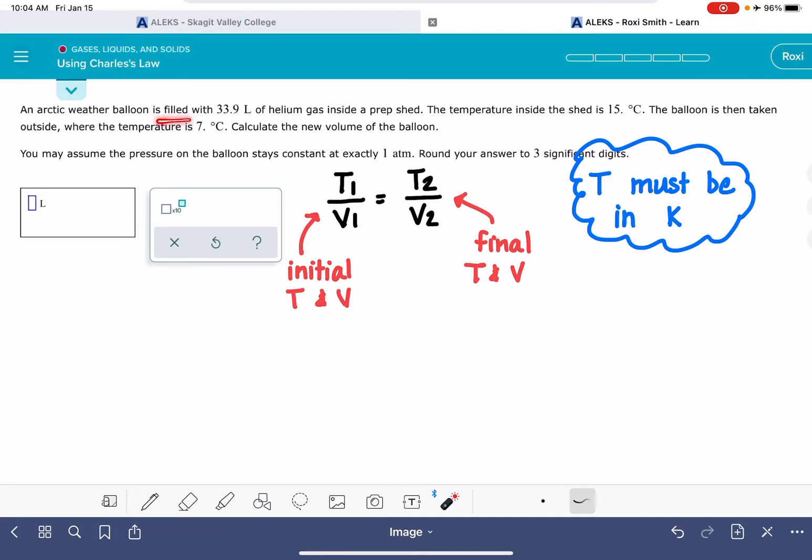So it tells us that we have a balloon that is filled with 33.9 liters of gas. That is going to be our initial volume. And the temperature inside the shed, the temperature of this gas, that's going to be 15 degrees. That's going to be our initial temperature.